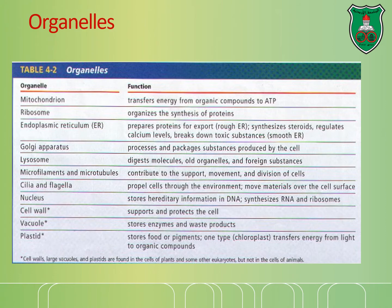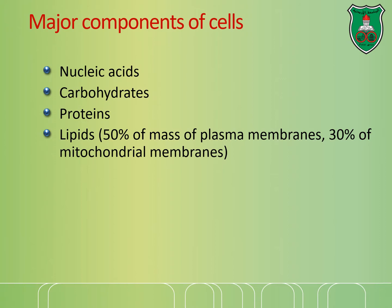There are four major molecular components of cells: nucleic acids, carbohydrates, proteins, and lipids. Three of them—nucleic acids, carbohydrates, and proteins—are polymers. Lipids are heterogeneous, and the only thing they have in common is that they are hydrophobic.